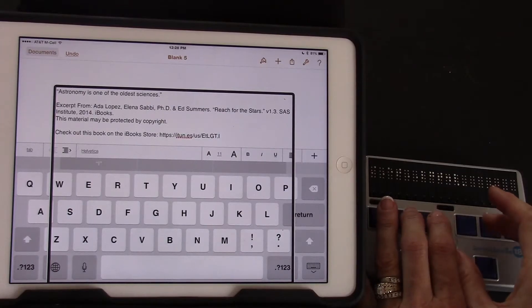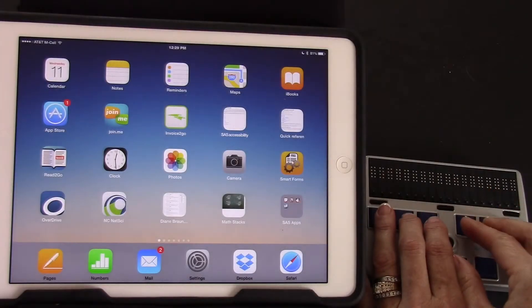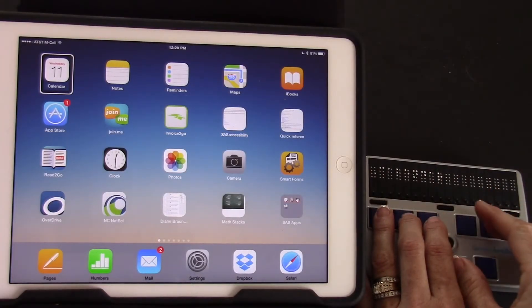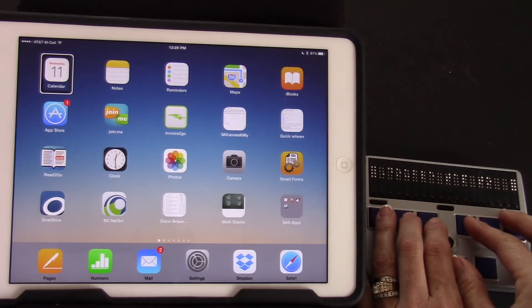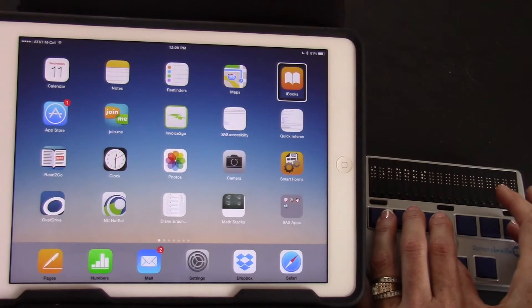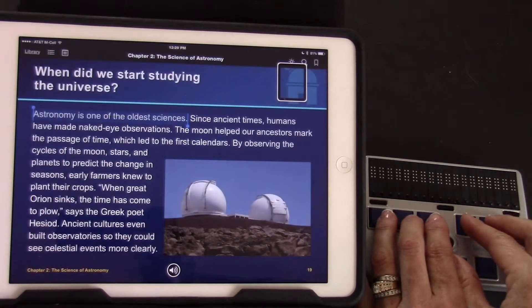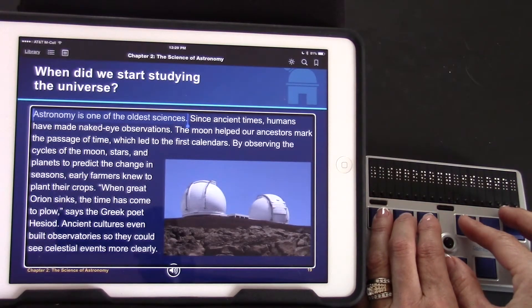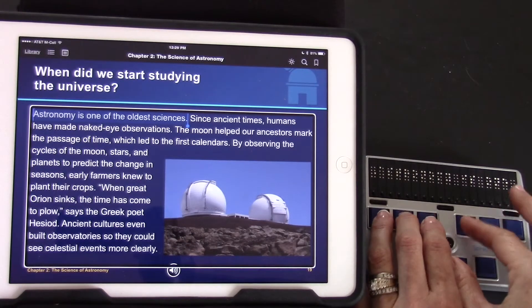I'm going to use H chord. Calendar. Wednesday, March 11th. I'm going to move to iBooks. Four space. And select three six space. Astronomy is one of the oldest sciences. Since ancient times humans have made naked eye observations. And pause.